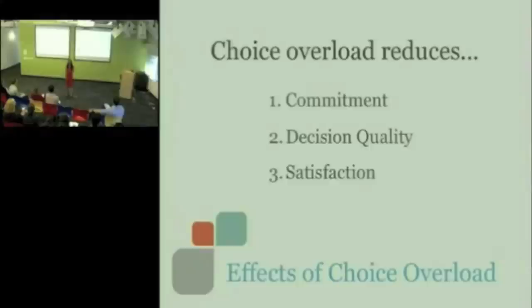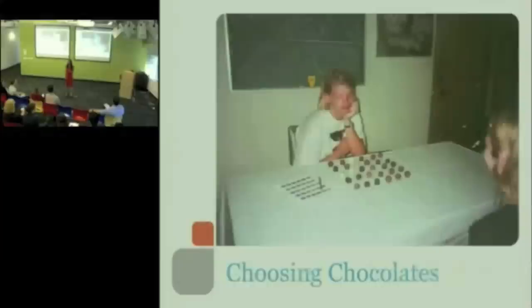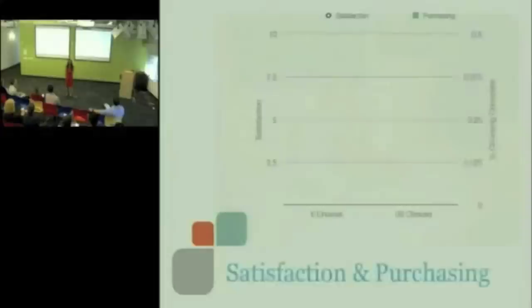Third consequence, the more choices people have, the more likely they are to be less satisfied with that which they have chosen. Why? Because you're constantly saying, what if? So, here's one of my favorite examples, just because food's on the mind right now. Imagine either being shown six different kinds of Godiva chocolate or 30 different kinds of Godiva chocolate. And the only thing you have to do is pick a chocolate, eat it, tell me how delicious it is. Turns out the same chocolate selected from six is regarded as more delicious than when it was chosen from 30.